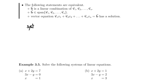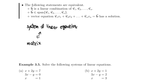Earlier, we talked about how whenever we have a system of linear equations and we try to solve it, we can turn it into an augmented matrix. So there is some relationship between the system of linear equations and matrices. In this example 3.5, we're going to talk about how vectors fit into all this — specifically how vectors translate into systems of linear equations, and in the next example, how vectors translate into the properties of a matrix.